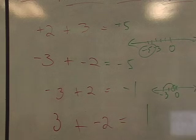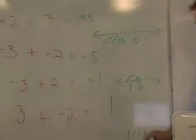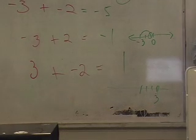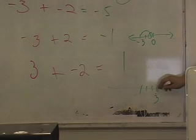3 plus negative 2, what's that equal to? On the number line, 3 plus negative 2 is 1, 2, 3 over. There's 3. Now which way do we go? Back, which way? Right or left? Which way do we go now?